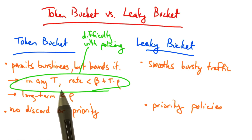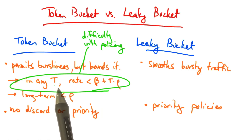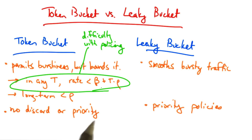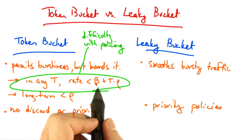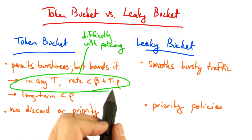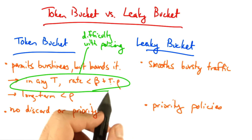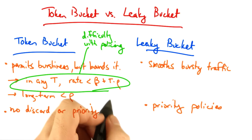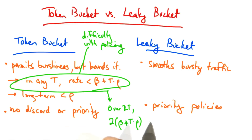Consider, for example, an interval of twice this length. If the flow can send β plus t times ρ in each interval, then over 2t, the flow can consume 2 times β plus τ times ρ tokens.